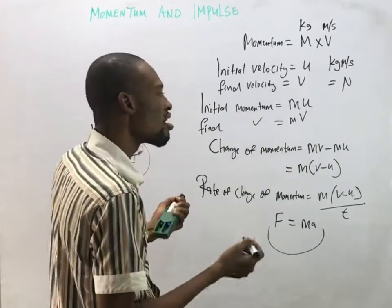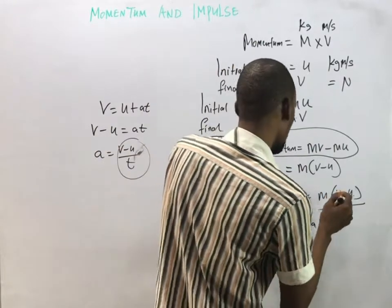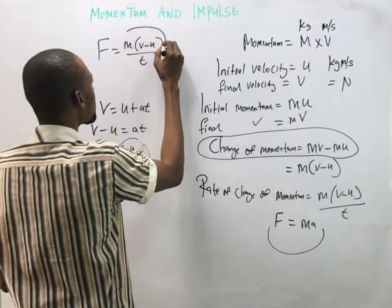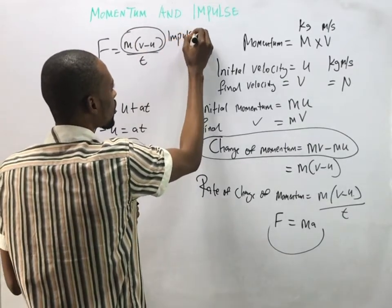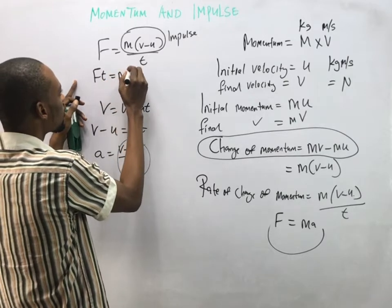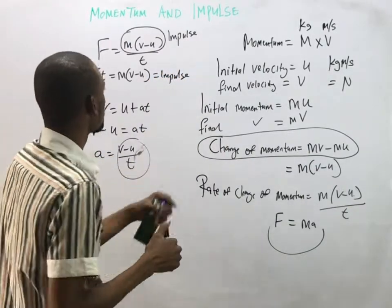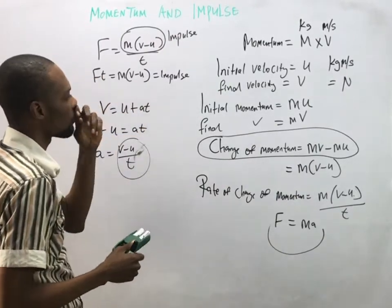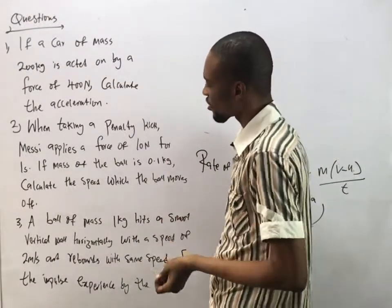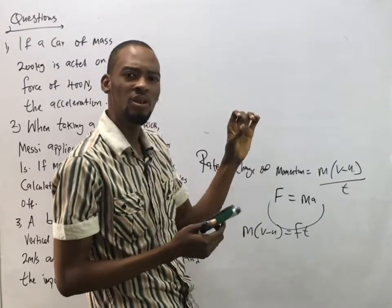Impulse is simply the change of momentum. Force equals change of momentum over time, so cross-multiplying gives: force times time equals change in momentum. Therefore impulse equals change in momentum, or force times time. Impulse and momentum have the same unit — newtons or kilogram meters per second.